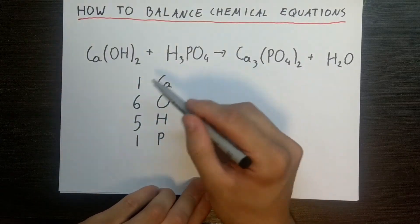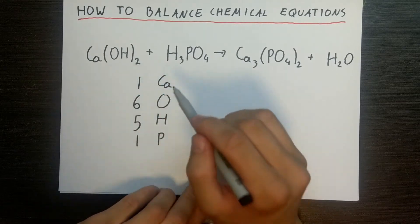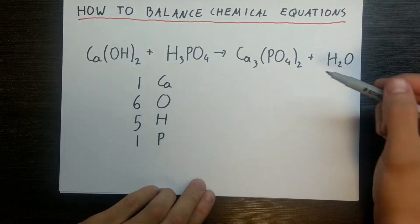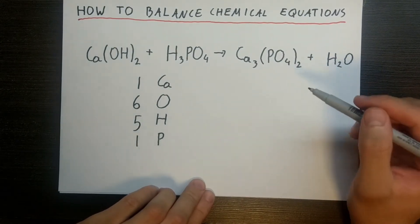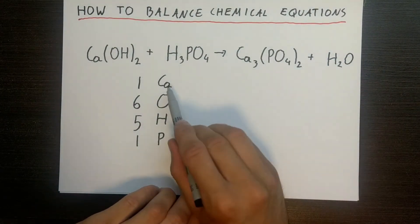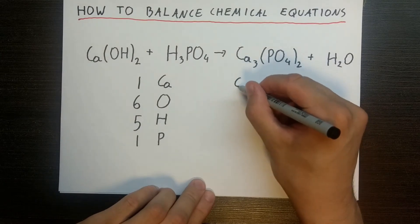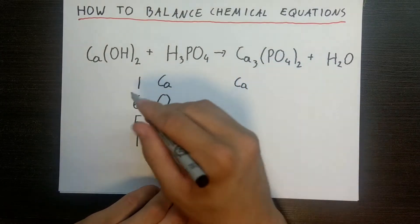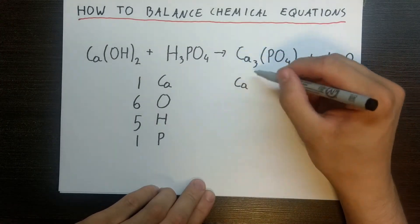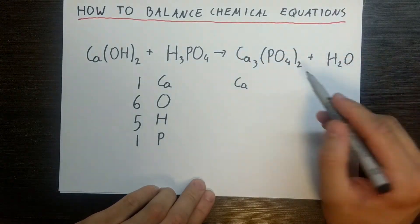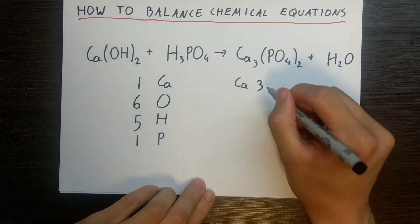So now we have a summary of all the atoms on this side of the equation. Now we need to take a stock of all the atoms on the other side. The way I do this is to match them up. So I put calcium on this side to make it easier to see — and on this side we have three calciums, however we don't have anything there, so three in total.